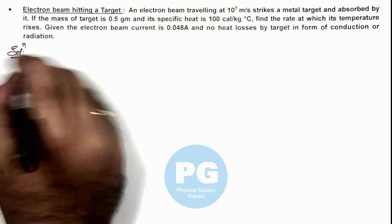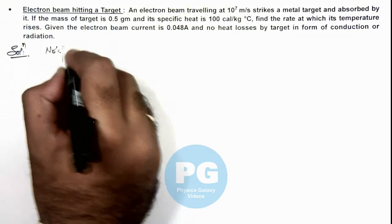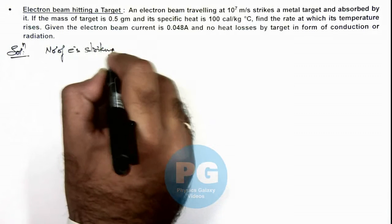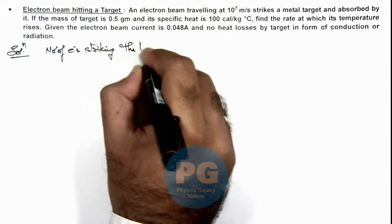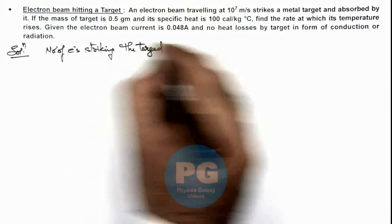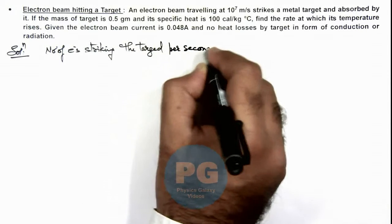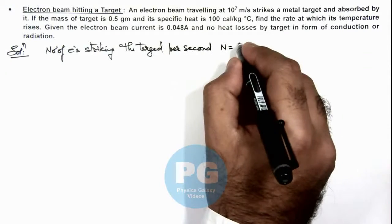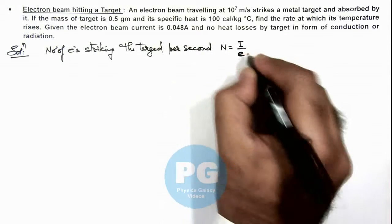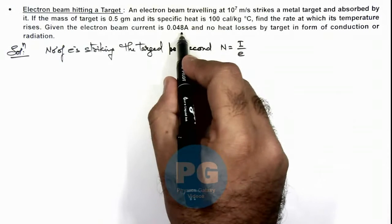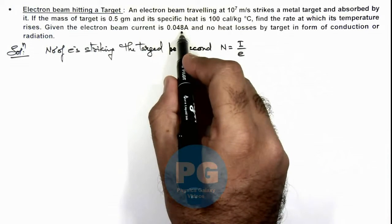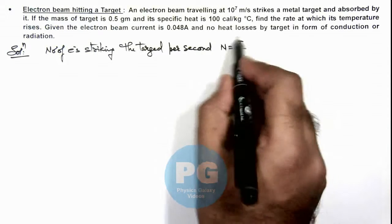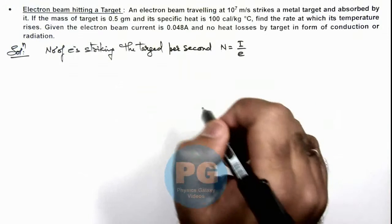First we calculate the number of electrons striking the target per second. This number of electrons we can simply calculate by the beam current divided by electron charge. Because this current is amount of charge per unit time and electron charge we already know, I divided by e gives us the number of electrons hitting the target.